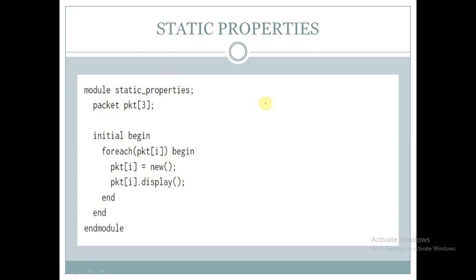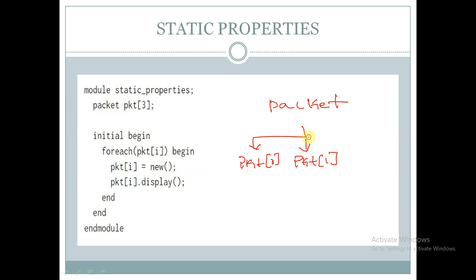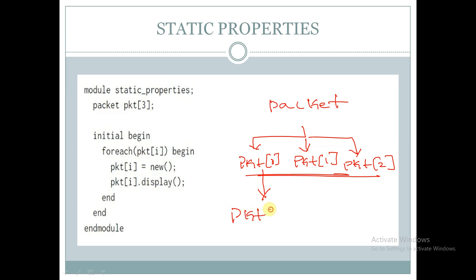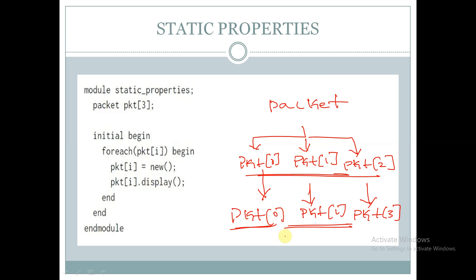Within the module we are creating three handles of the class packet: PKT[0], PKT[1], and PKT[2]. Within an initial begin block we are creating objects for these handles — PKT[0], PKT[1], and PKT[2] — so we have created three objects for this class. We then display using these three handles: PKT[0].display, PKT[1].display, and PKT[2].display.